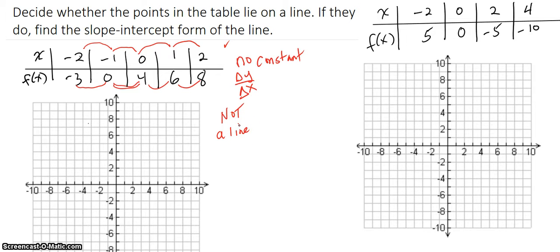And we can see that by graphing these points. Negative 2, negative 3 would be right here. Negative 1, 0 is here. 0, 4 is there. 1, 6 is here. And 2, 8 is up there.